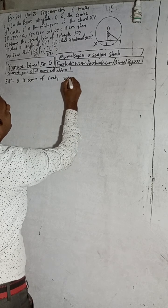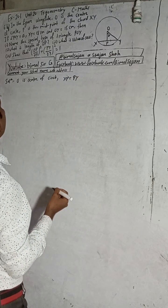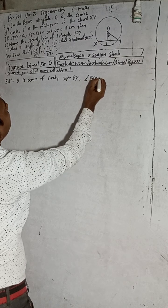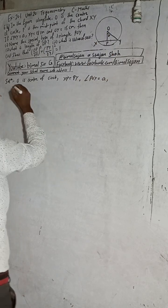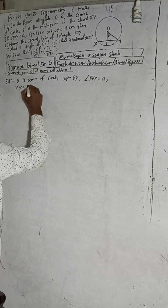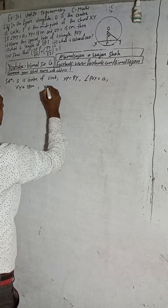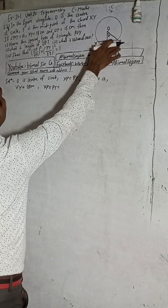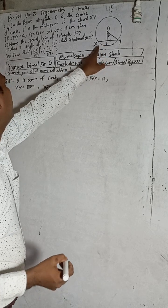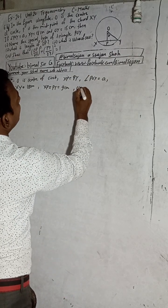Given: O is the center of the circle. P is the midpoint of chord XY, meaning XP equals PY. Angle POY equals alpha. XY equals 18 cm. Since P is the midpoint, XP plus PY equals XY, so XP equals PY equals 9 cm — half of 18 — so each half is 9 cm. OY equals 15 cm.